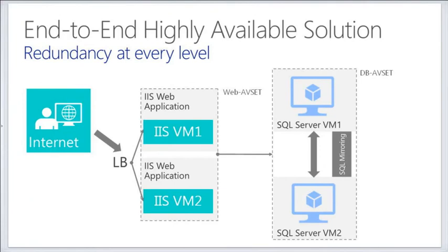High availability isn't just for front-end servers. I can set up high availability between my front-end web servers — in this graph we have two — with the load balancer in front of them. Then I can set up SQL VMs and do SQL mirroring between two VMs, making those highly available so I can bring down any one server. I could actually bring down two of those servers — as long as one SQL and one IIS server remain — and have no downtime. I can create highly available environments using load balancers or other technology to create that redundancy inside Azure.